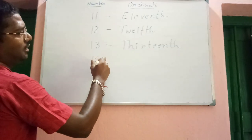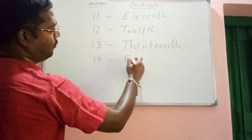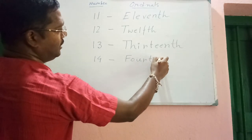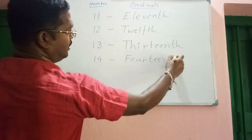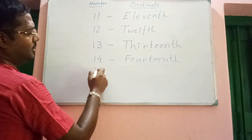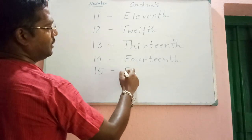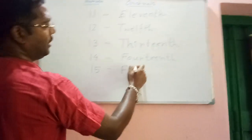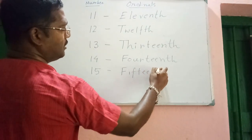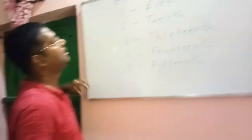Number is fourteen and ordinal will be fourteenth — F-O-U-R-T-E-E-N-T-H. Next, number is fifteen and ordinal will be fifteenth — F-I-F-T-E-E-N-T-H.